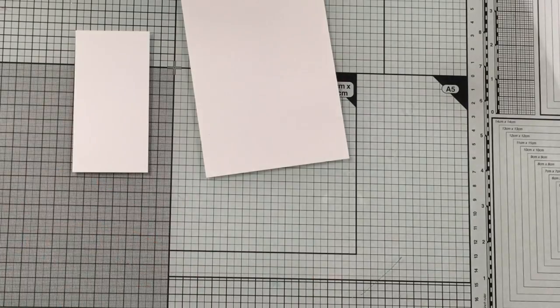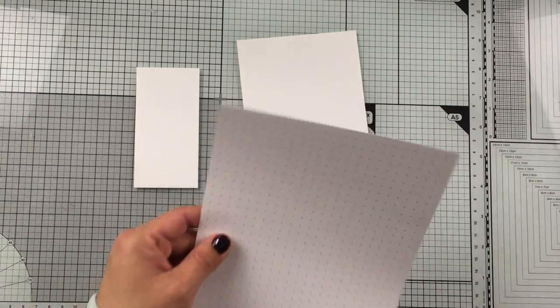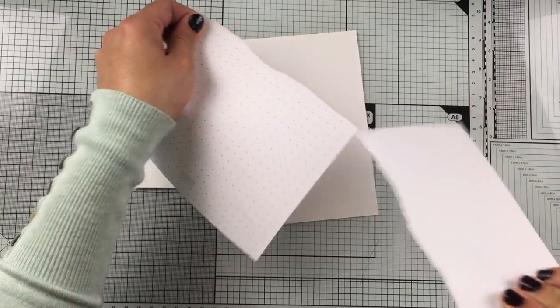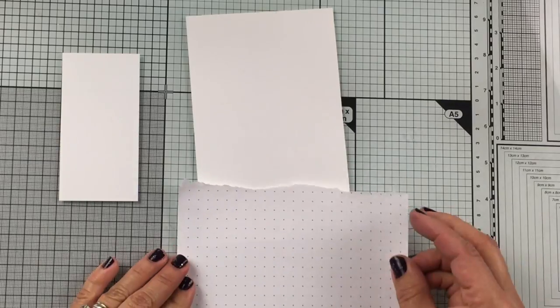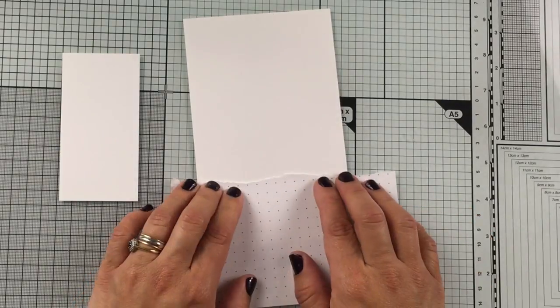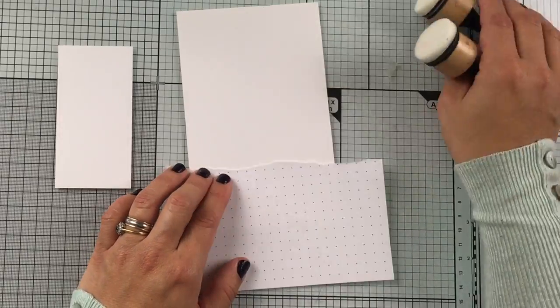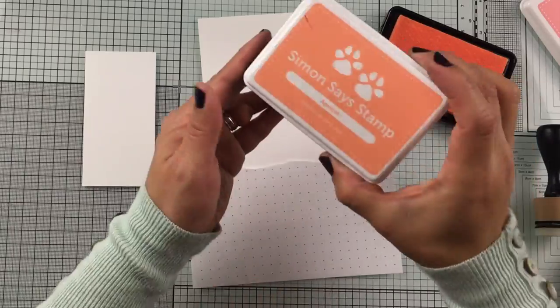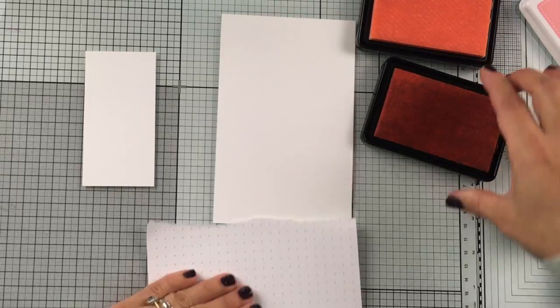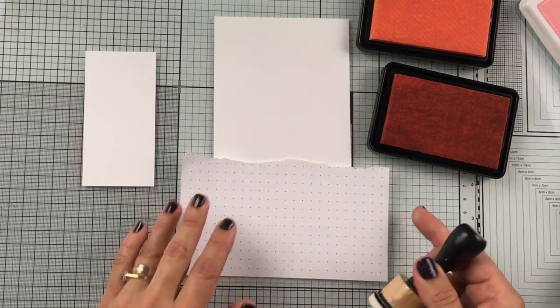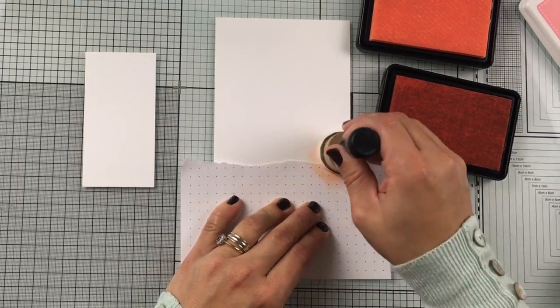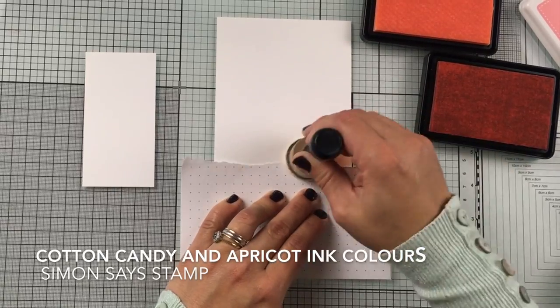So I'm going to grab a piece of paper and I'm going to tear it like so, so that I can create a mask to protect that area there on the paper. I'm going to apply some inks by Simon Says Stamp. I'm going to be using Cotton Candy which is a very soft pink, and this ink here which is apricot, a peach color, just beautiful.